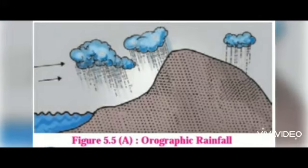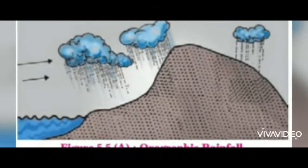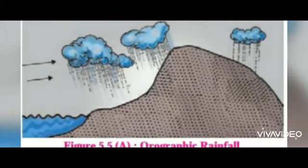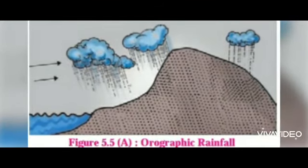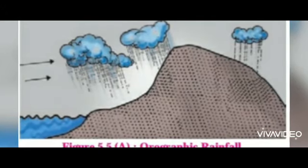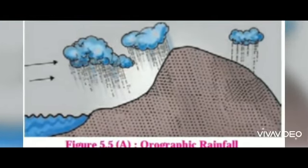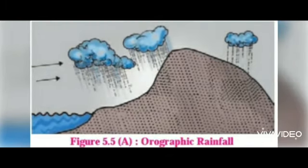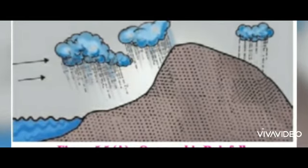When rainfall occurs due to the obstruction of mountains, it is called orographic rainfall. Moist air coming from lakes or seas is obstructed by mountain ranges and starts moving upwards along the slope. The temperature of such winds drops with height, condensation takes place, water droplets form, and rainfall occurs. The windward side of the mountain gets more rainfall, while the leeward side becomes the rain shadow region. India receives rain due to monsoon winds and is predominantly an example of orographic rainfall.